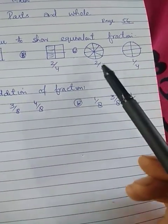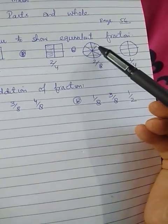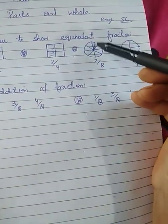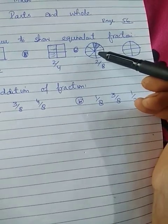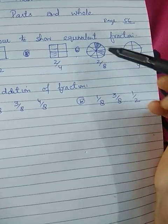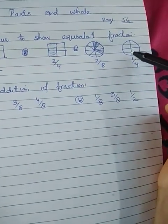We have to color 2 by 8 - that means out of these eight, we color two parts. Suppose part number one and number two, we color them to show 2 by 8.